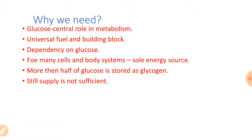Now, about half of all the glucose present in our body is stored. The storage form of glucose is glycogen. Glycogen is the storage form of glucose in our body and it is stored in the liver and muscles.